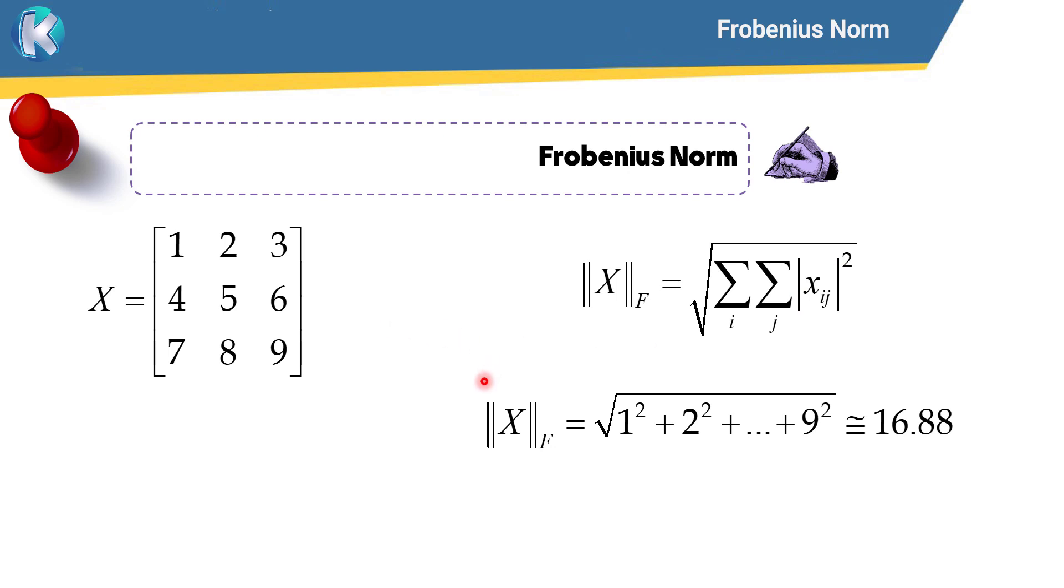For example, in this example, it is equal to the square root of 1 to the power of 2 plus 2 to the power of 2 plus 3 to the power of 2 plus 4 to the power of 2 all the way up to plus 9 to the power of 2, which if you calculate all this stuff, it is approximately equal to 16.88.